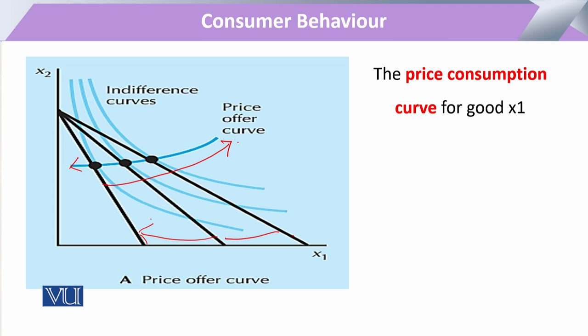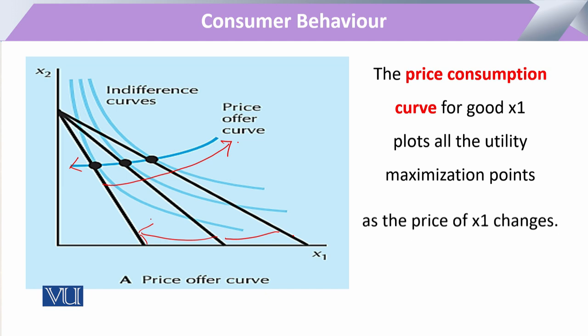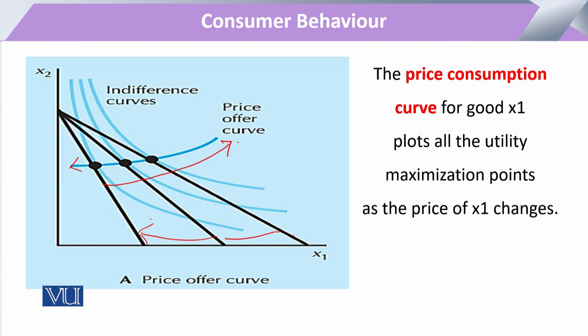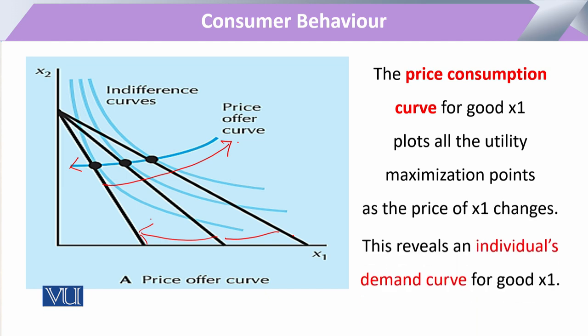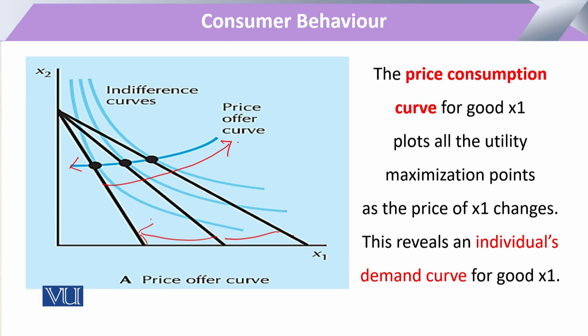The price consumption curve for good x1 is the total plot or the locus of all the utility maximization points or optimal choice bundles with respect to the price of x1. At the same time, because it explains the relationship with the quantity demanded, it provides us the individual demand curve.